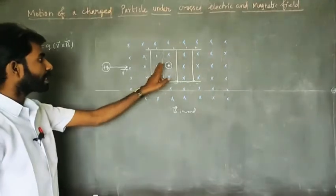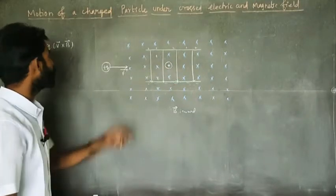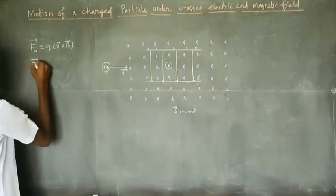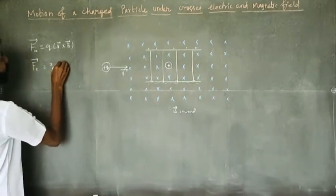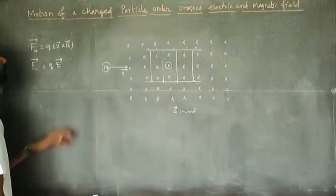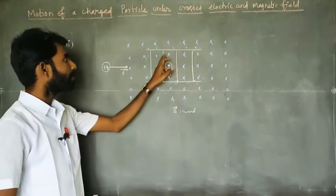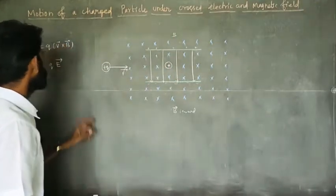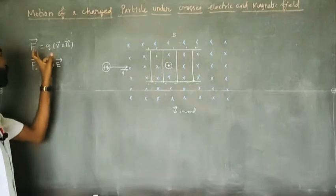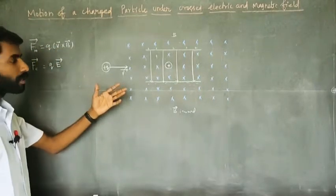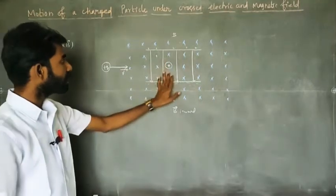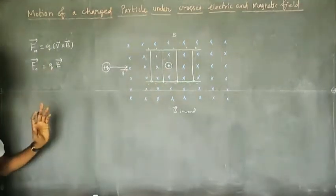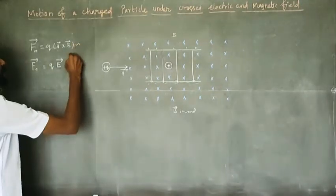The electric force — the Coulomb force — Fc is equal to qE vector. The charged particle also experiences a magnetic force: F is equal to q into v vector cross B vector. At the same time, the electric field gives an electric force equal to qE.